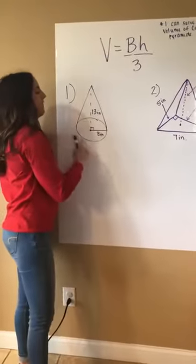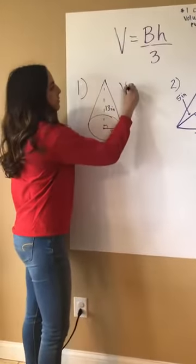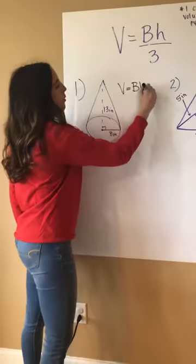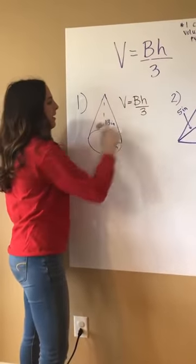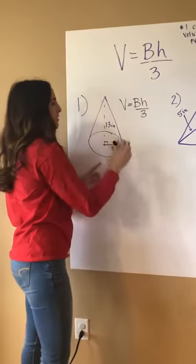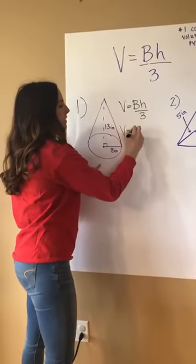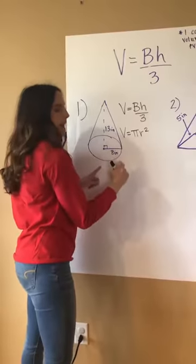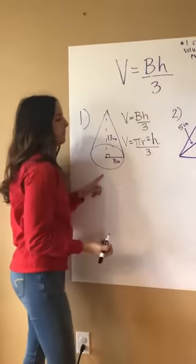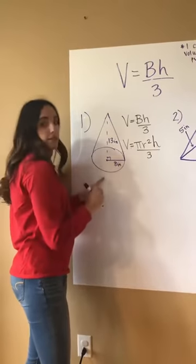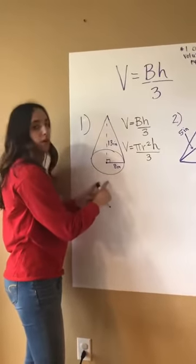So let's do problem number one. This is a cone. We always start with that mama formula and now the base area. This base is a circle. So area of a circle is pi r squared. It's going in for that capital B. Bring down your H and divide it by three.